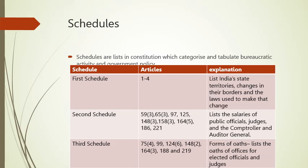The first schedule covers articles 1 to 4. It lists India's states and territories, changes in their borders, and laws used to make those changes. The second schedule includes articles 59, 65, 75, 97, 125, 148, 158, 164, 186, and 221, and lists the salaries of public officials, judges, and the Comptroller and Auditor General.